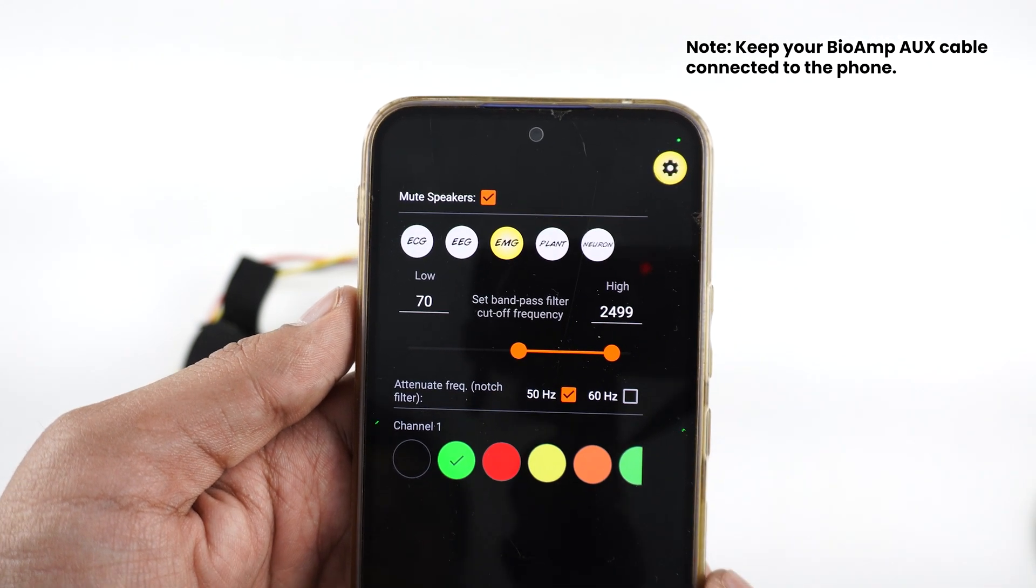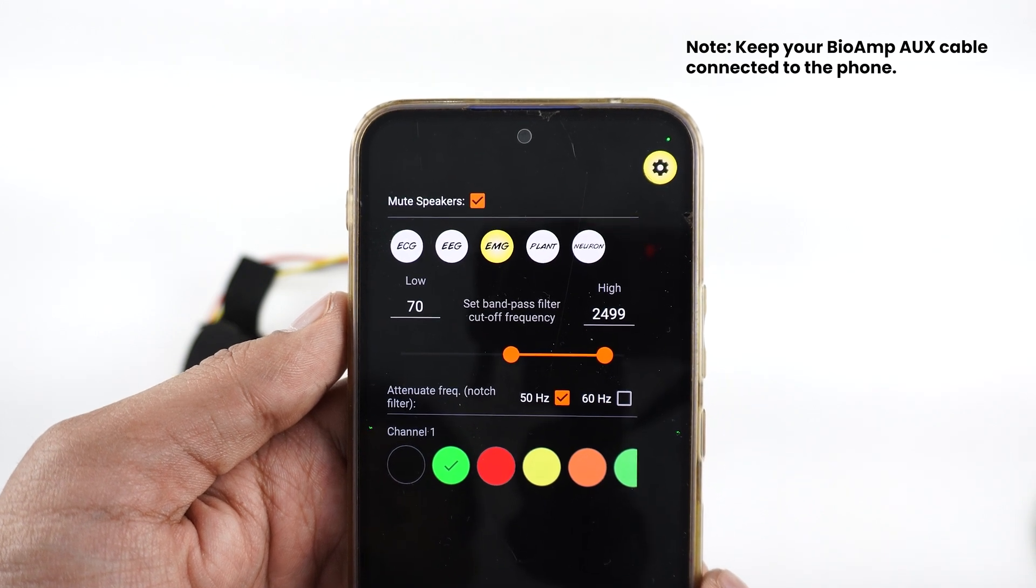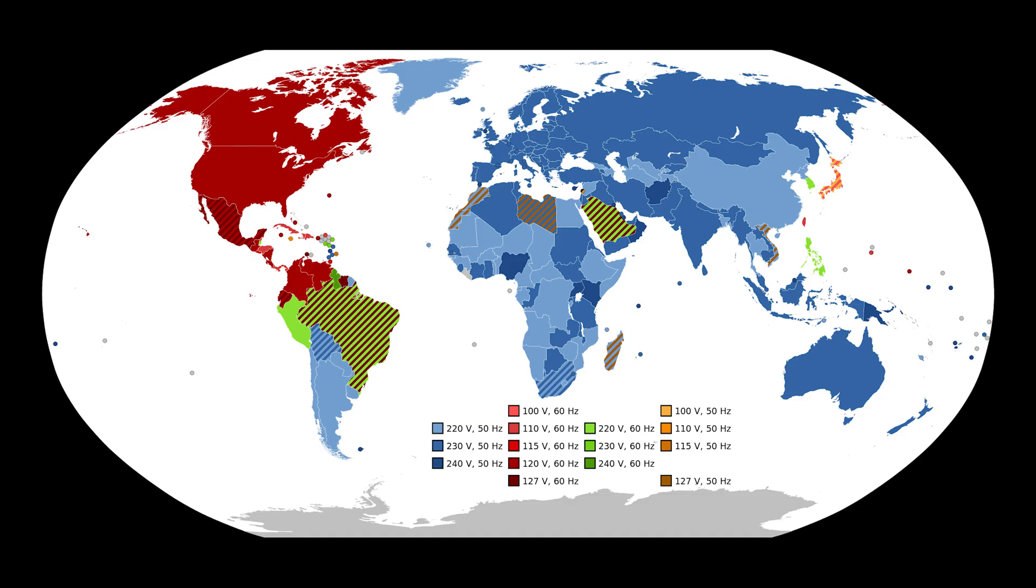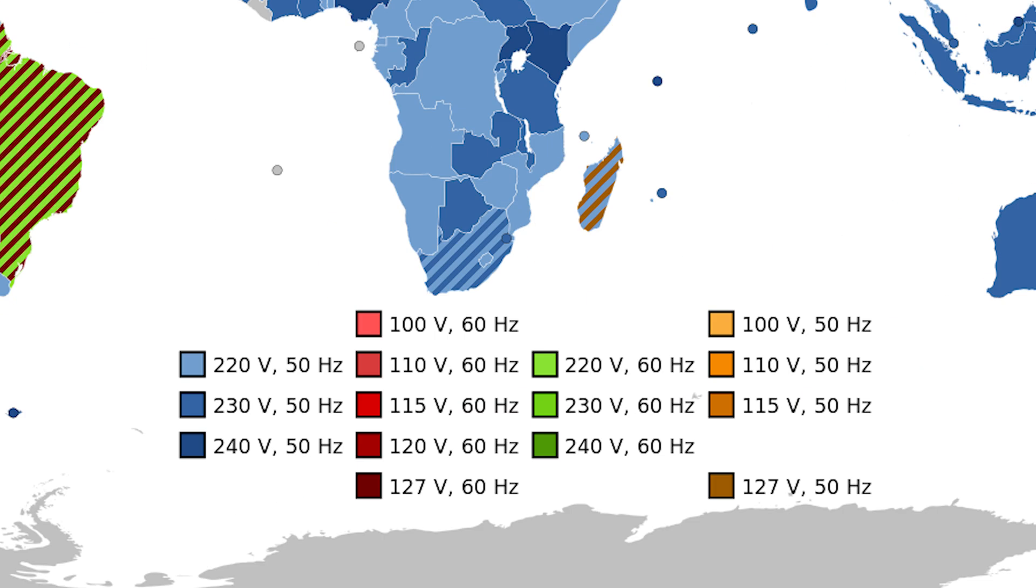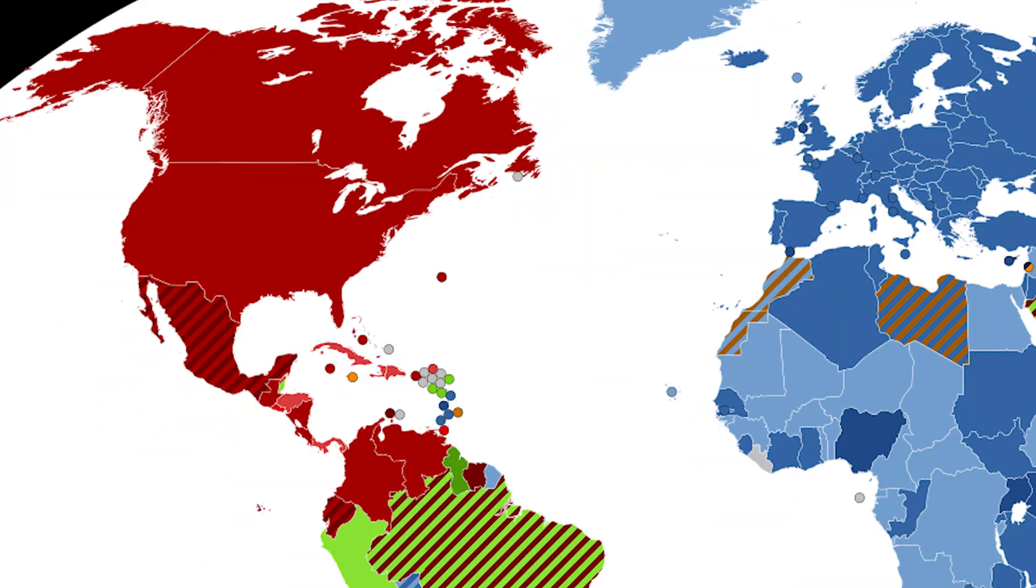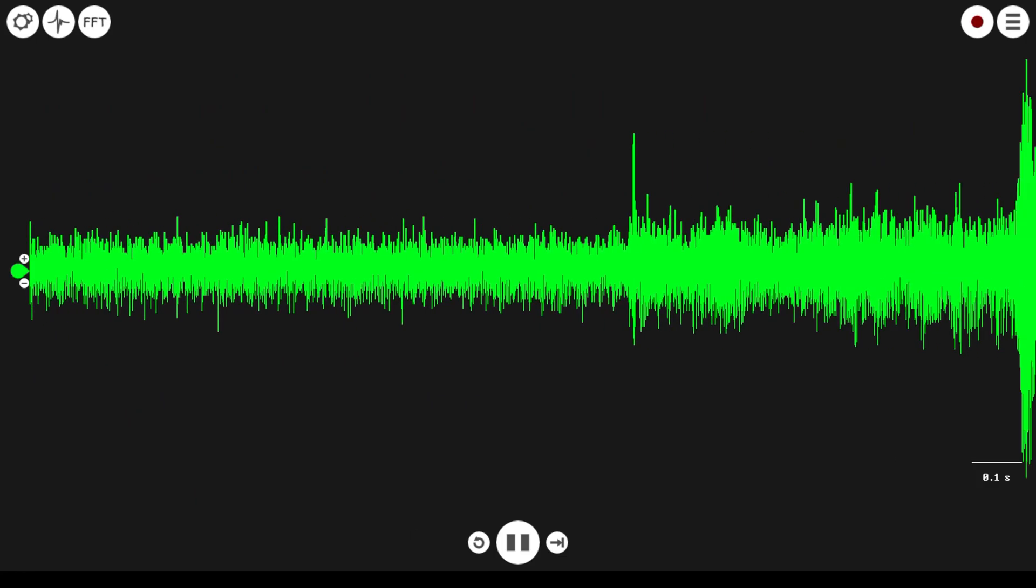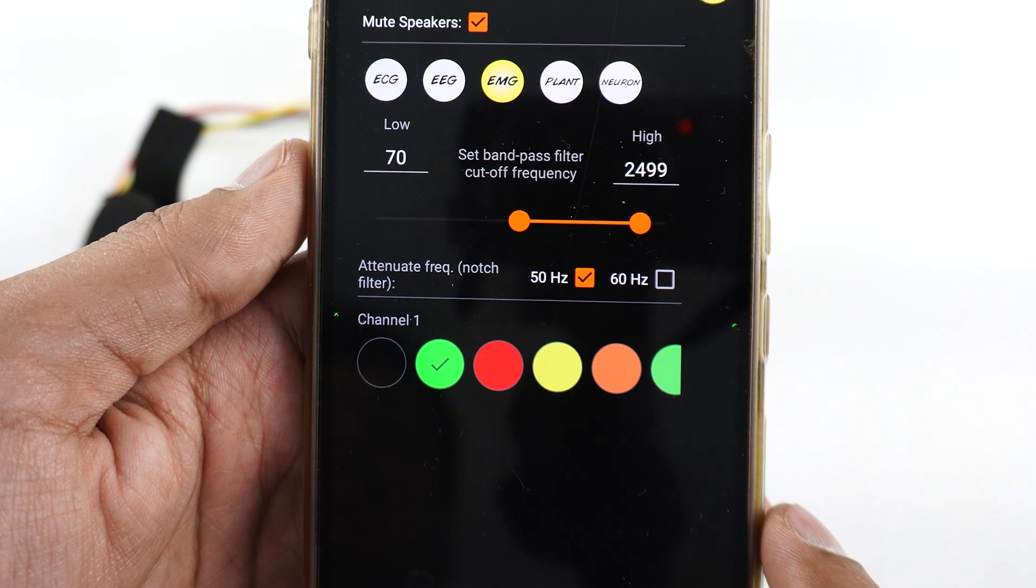Apply the 50 hertz or 60 hertz notch filter depending on the country you are living in. For example, if you are in India, then the AC current oscillates at a frequency of around 50 hertz, but it oscillates at 60 hertz frequency in USA.